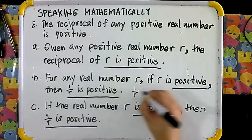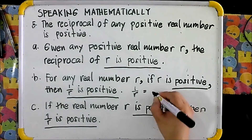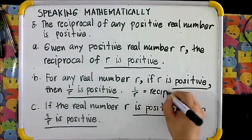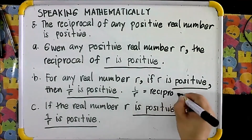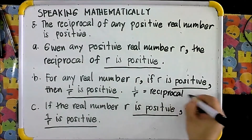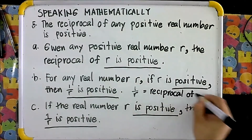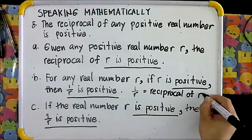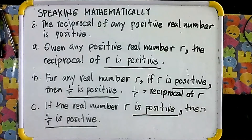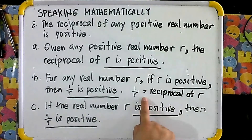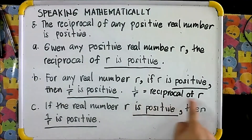Take note: 1 over R is equal to the reciprocal of R. So 1 over R is simply the same as the statement 'reciprocal of R.'